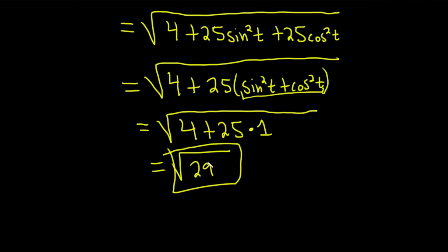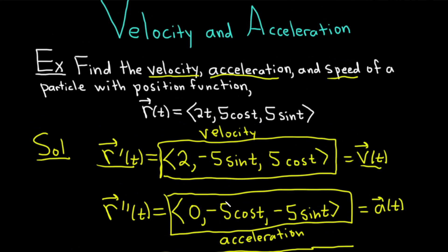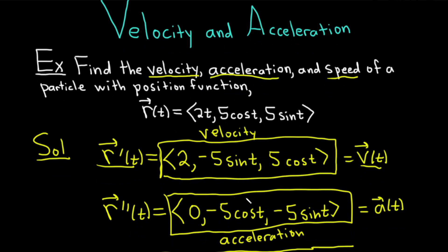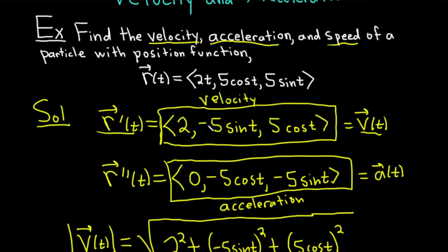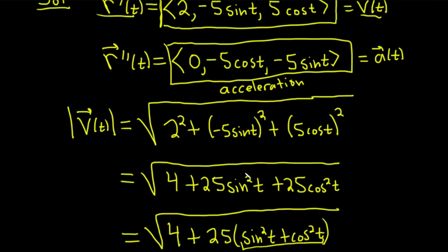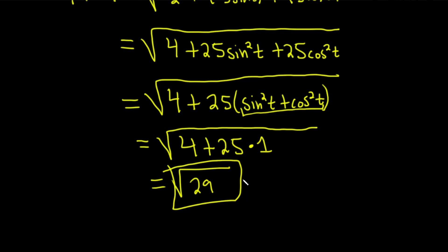So just a quick recap. When you are given a position function and you want the velocity, all you have to do is find the derivative that gives you the velocity. And if you want the acceleration, you just take the derivative again. And if you want the speed, what you do is you take the magnitude of the velocity. And so you square each of the components and take the square root. I hope this video has been helpful and hopefully you learned some mathematics. If you enjoyed this video, make sure to check out more videos on Chegg. Until next time, good luck and take care.